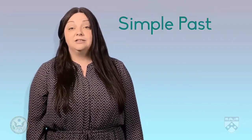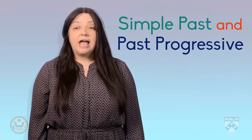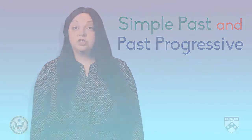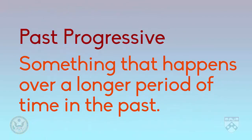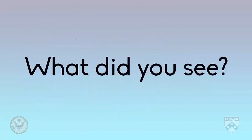These WH questions are in the simple past and the past progressive forms. To ask something that started and ended in the past, we use the simple past. For example: 'What did you see?' 'What' is the question word, 'did' is the helping verb, 'you' is the subject, and 'see' is the main verb.